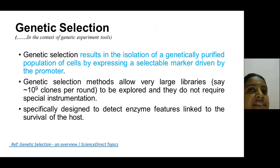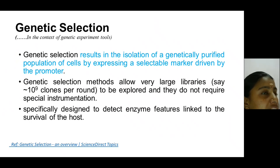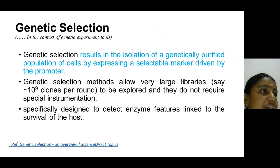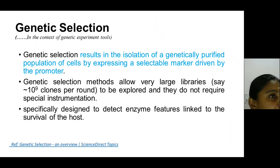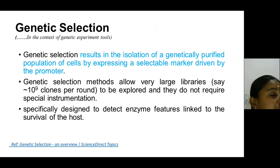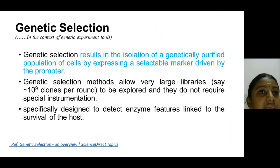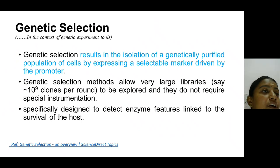We should know the definition of selectable markers. Selectable marker genes need to be expressed in order to isolate the genetically pure cells. For instance, if you want to isolate the antibiotic-resistant cells in a population of cells in which you are performing the experiment, the positive selectable marker in that case is that particular antibiotic-resistant gene. This antibiotic-resistant gene encodes for a particular enzyme that mediates resistance to the particular antibiotic. These come under positive selectable markers.